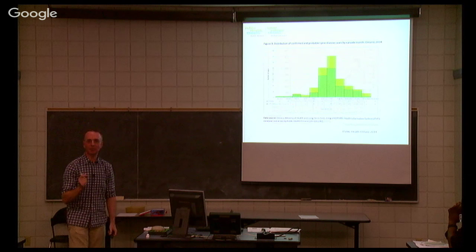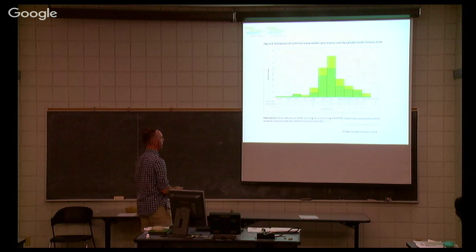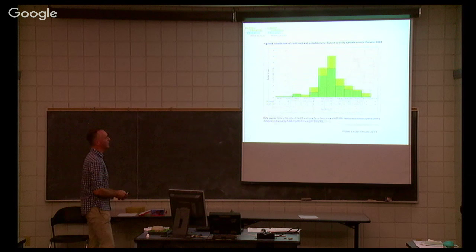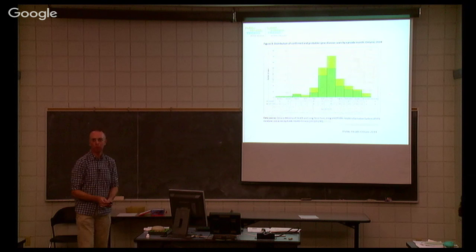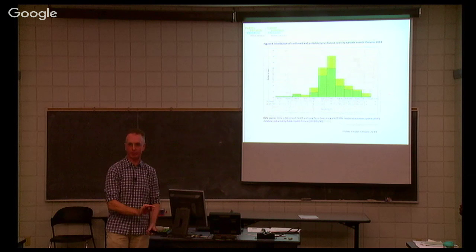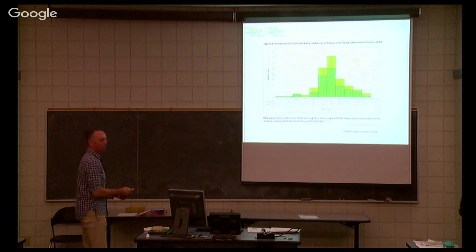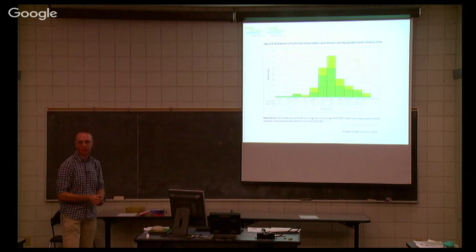What about seasonality? This shows when human cases were diagnosed in 2014 — peak in July, but the interesting thing is the tail goes right out to November. Most human cases are diagnosed within a month of the tick feeding. Cases in the fall are probably associated with the adults that appear at that time, while most summer cases are associated with nymphs in the environment.